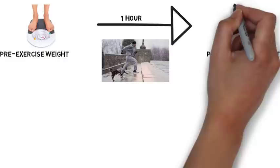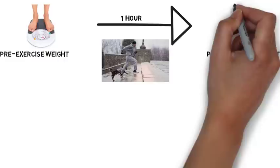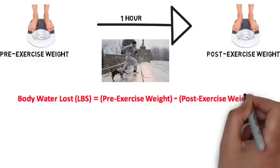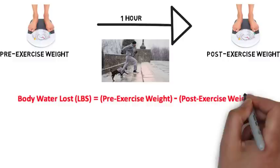After exercising for an hour, you will need to take another nude body weight. Once we have both the pre-workout and post-workout weights, simply subtract the post-workout weight from the pre-workout weight to find the difference in body weight during the exercise bout.